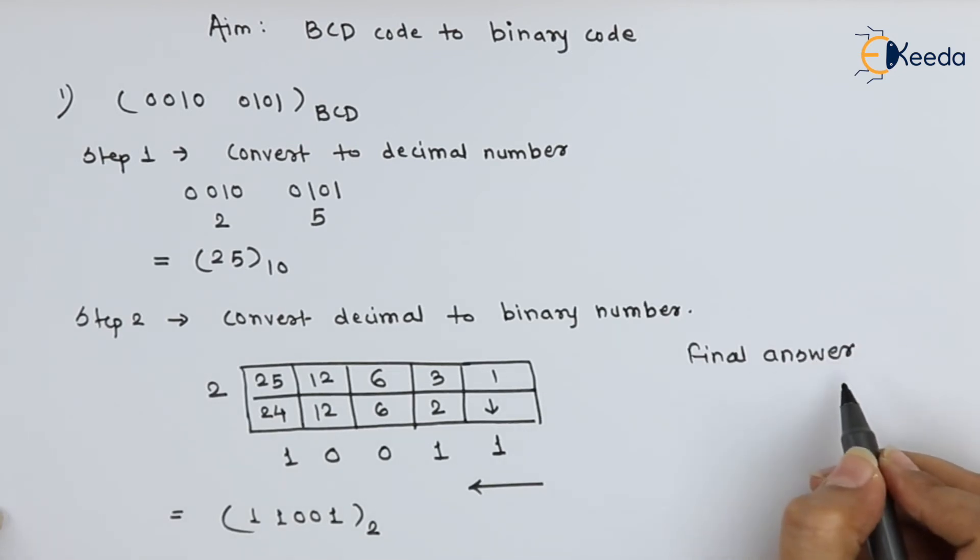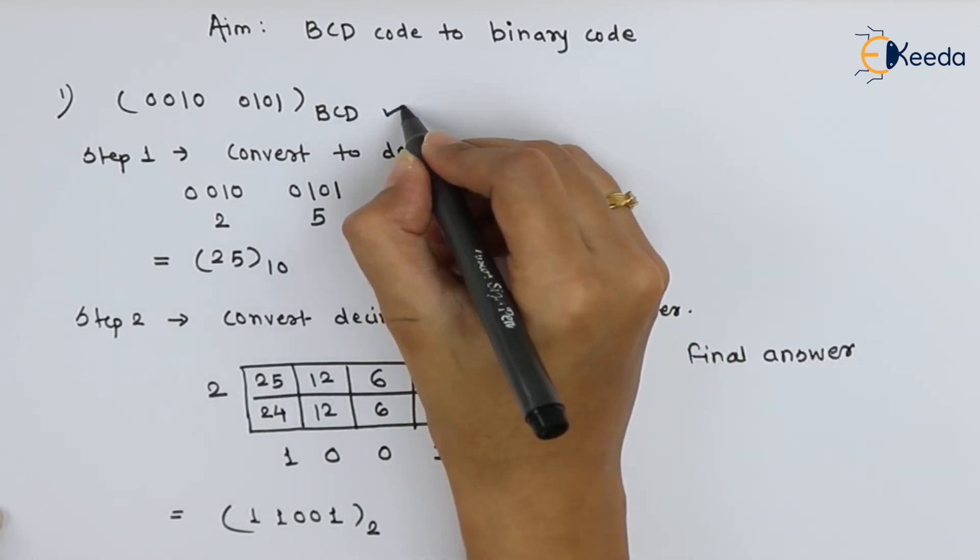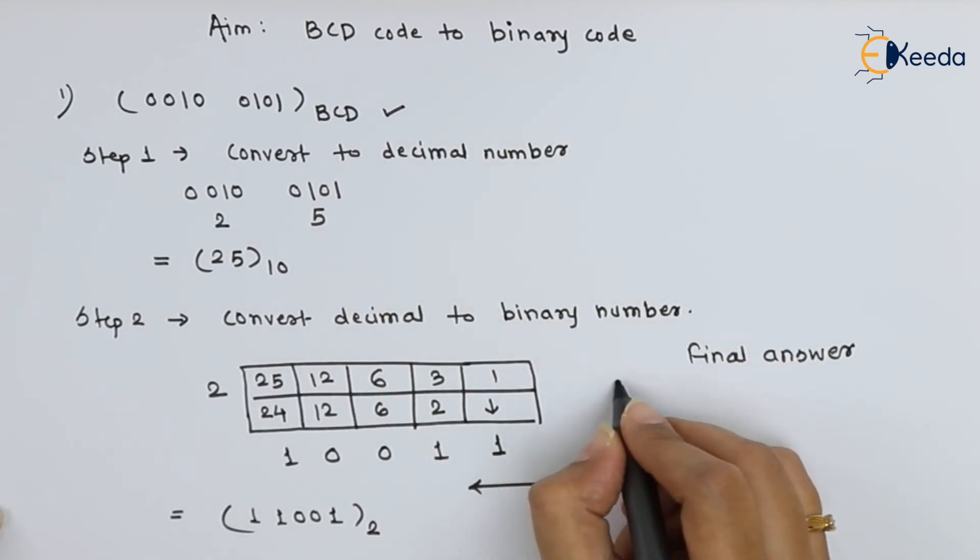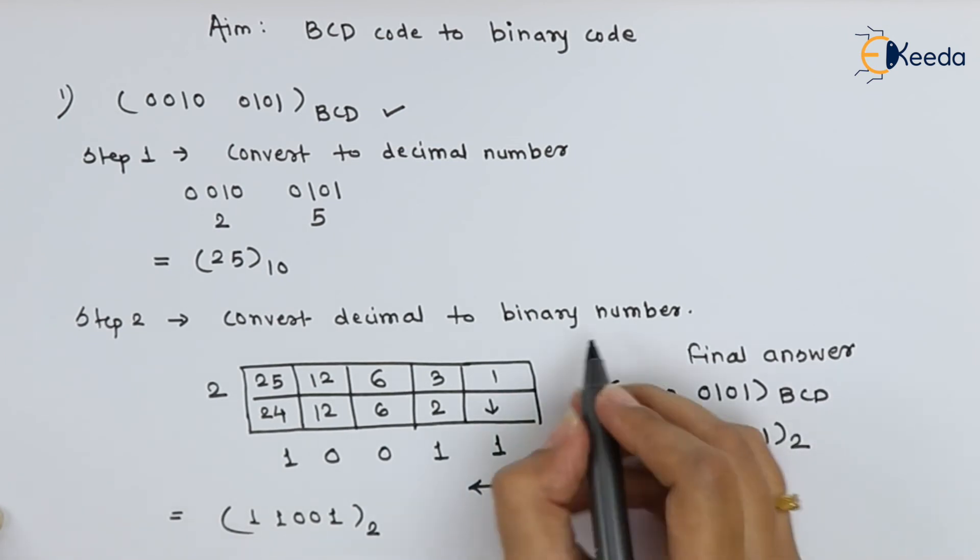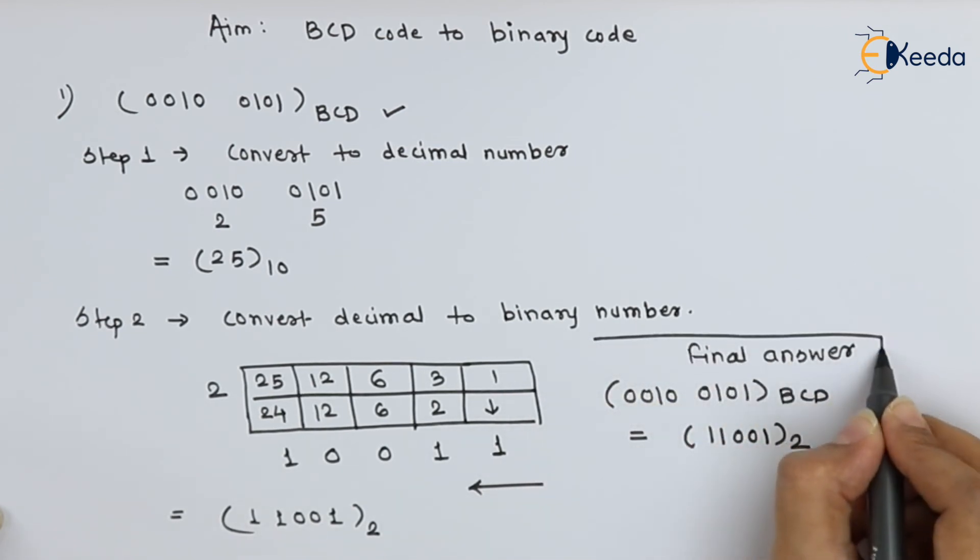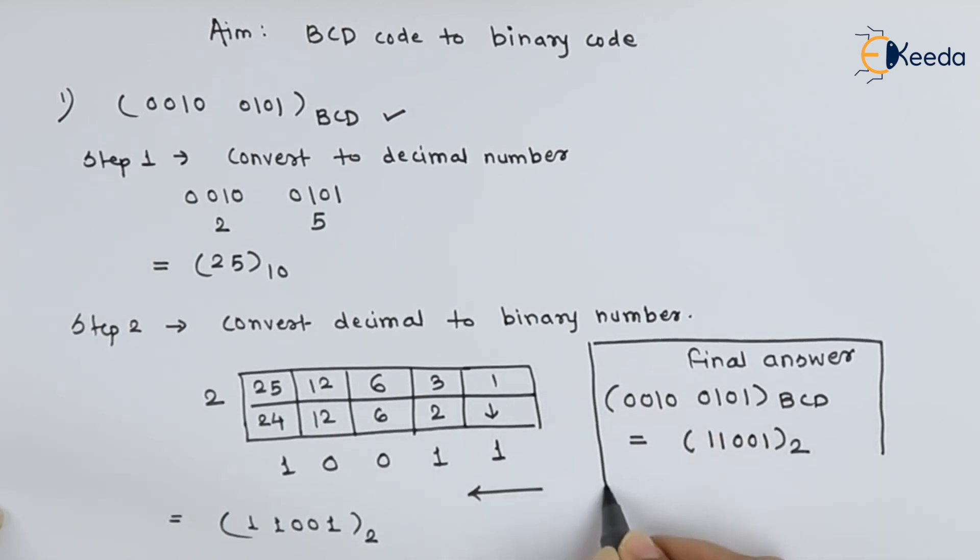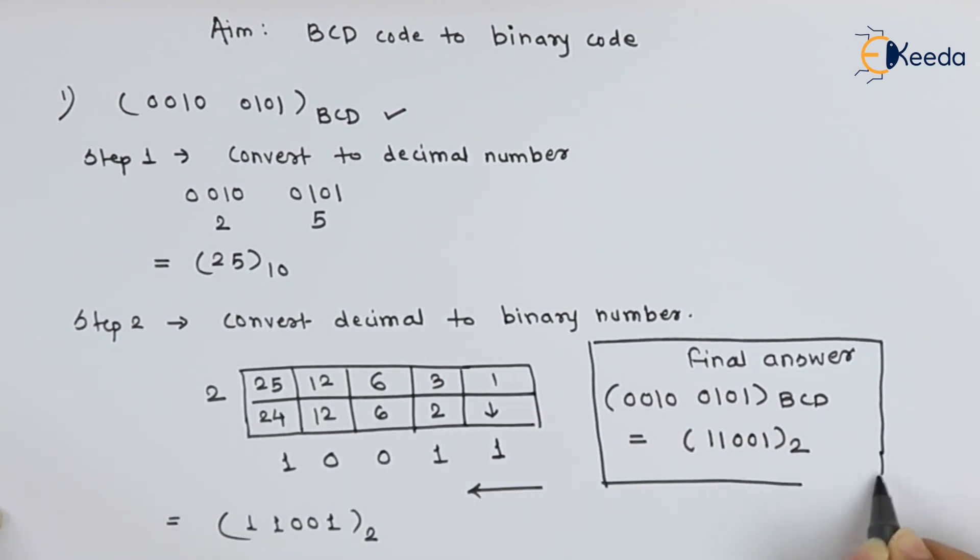At last, you can write your question in BCD form, that is 0010, 0101 to the base BCD. Answer is 11001 to the base 2. Always try to mention the final answer inside the boxes or at last.